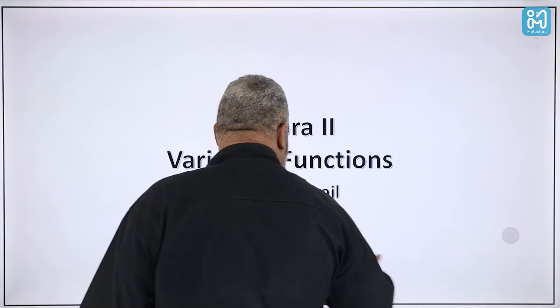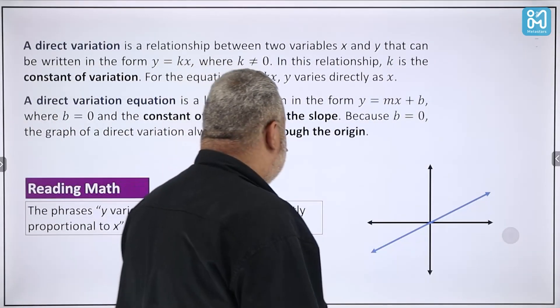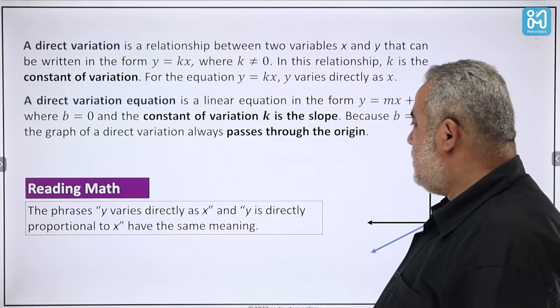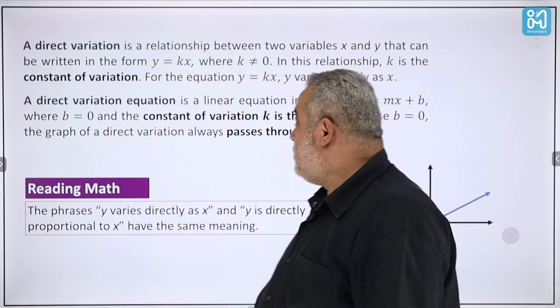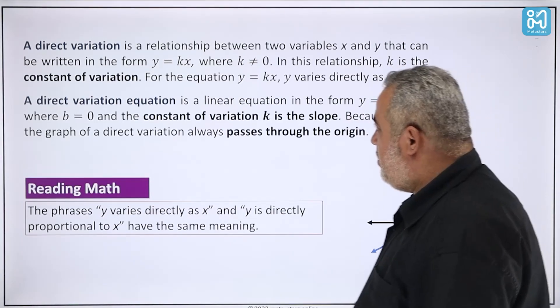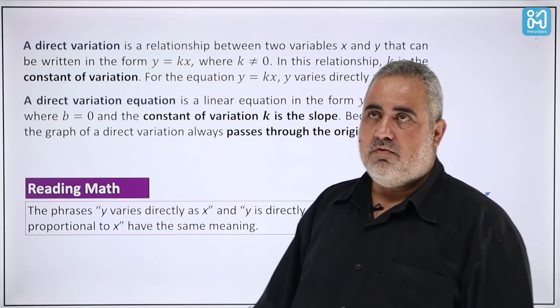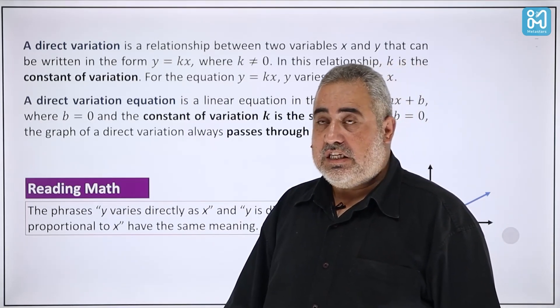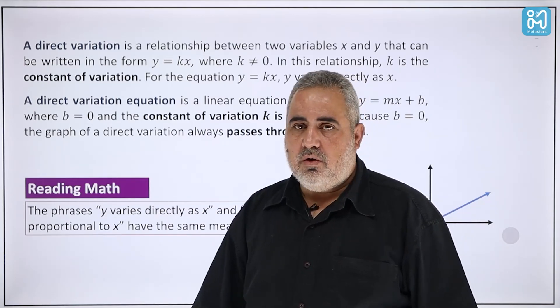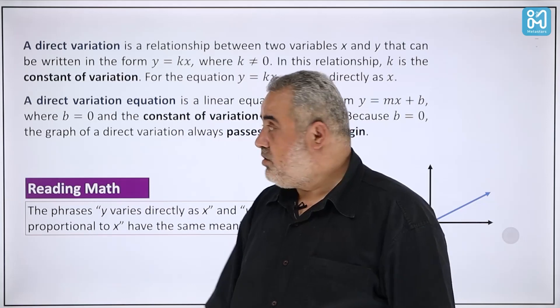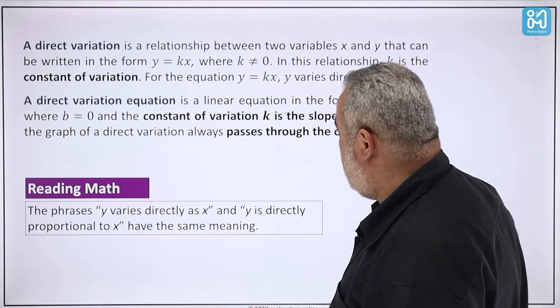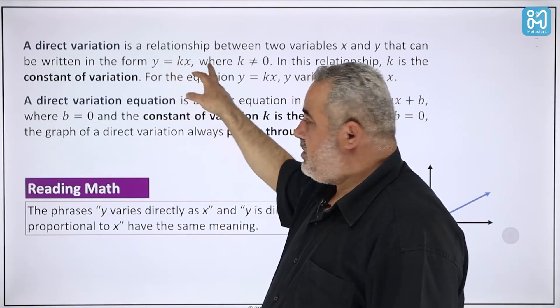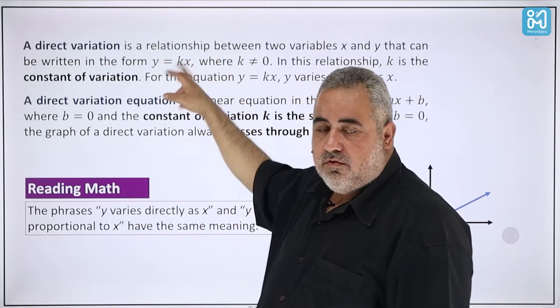A direct variation is a relationship between two variables x and y that can be written in the form y = kx. This is the most important thing — the equation of direct variation. It's a linear equation but without a y-intercept, or the y-intercept is actually equal to zero, where k does not equal zero. In this relationship, k is the constant of variation, which is equivalent to the slope m.